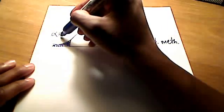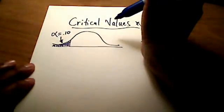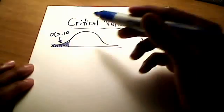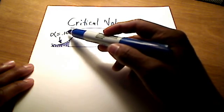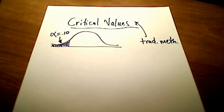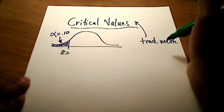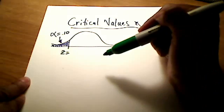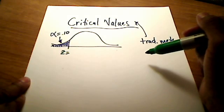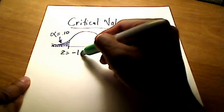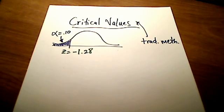If this is a left tail test, all of that 10%, all of that alpha, is sitting in the left tail. You'd be required to find the z number that corresponds to 10% sitting in the left tail. You could look it up on a normal distribution table or use Excel, and you would find that it's negative 1.28.